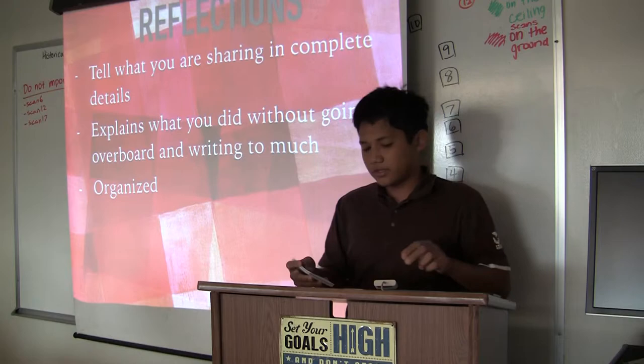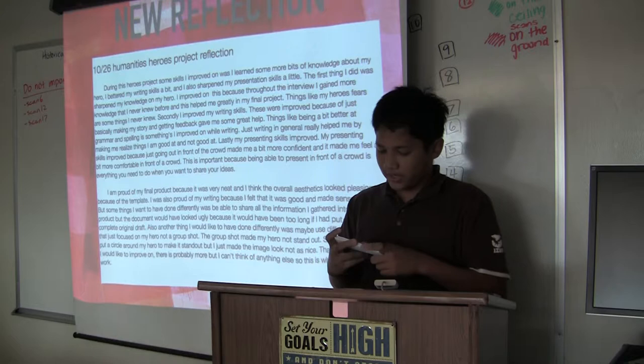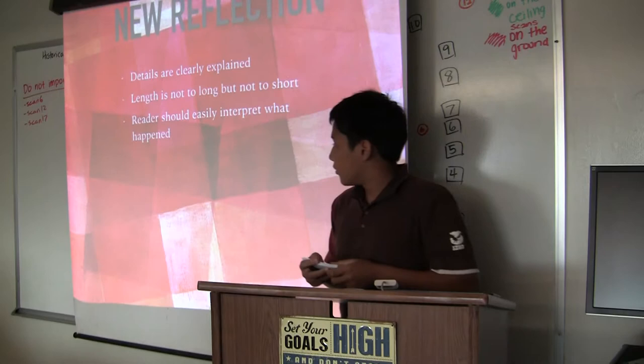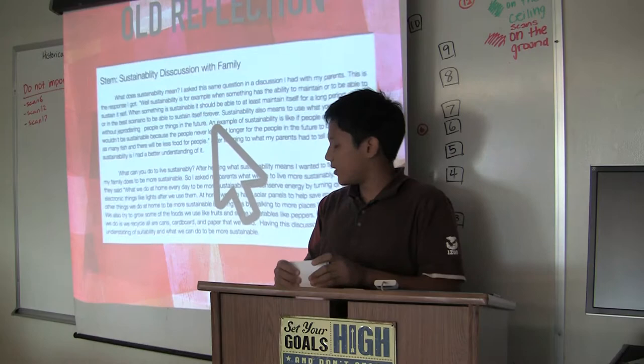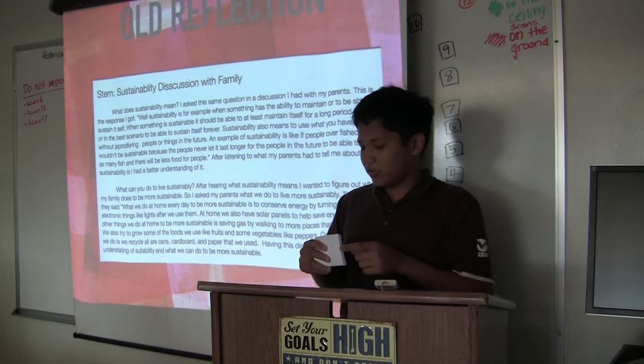Here's an example of a reflection from the Humanities Girls Day project. I feel that I explained the topic clearly without using too many details — the length is not too long but not too short, so a reader should understand what happened very easily. In contrast, one of my old reflections from the beginning of the year is shorter but the sentences are too long because I used too much detail in each sentence, and it ended up not making much sense and is hard to interpret.